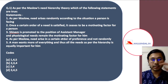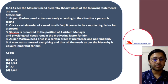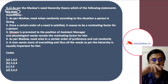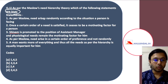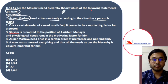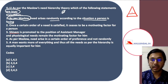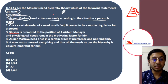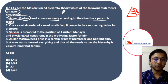The question asks: as per Maslow's need hierarchy theory, which of the following statements are true? Statement one says need arises randomly according to the situation a person is facing. Does it happen? According to Maslow's need hierarchy theory, we follow a proper hierarchy of needs and move from lower order needs to higher order needs — we cannot jump our needs. So need does not arise randomly according to the situation. Therefore, this statement is certainly incorrect.